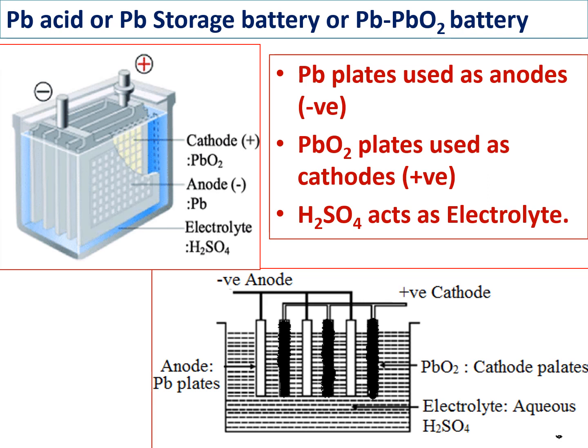We all know about these batteries from inverters and car batteries. These are examples of reversible secondary batteries, also called lead acid battery, lead storage battery, lead accumulator battery, or lead oxide battery. As usual, a battery contains electrodes and electrolyte. Electrodes are of two types: anode and cathode. So what is the anode here, what is the cathode, and what acts as the electrolyte? First of all, we have to know those things. Lead plates act as anodes.